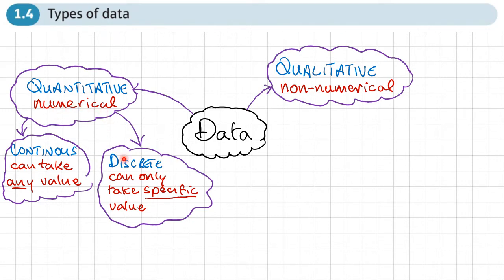Or numerical data can be called discrete data. This is where the data can only take specific values, normally like whole numbers. So this could be, for example, the numbers you get when you roll a dice. The only values we're going to get are going to be whole numbers from one to six.